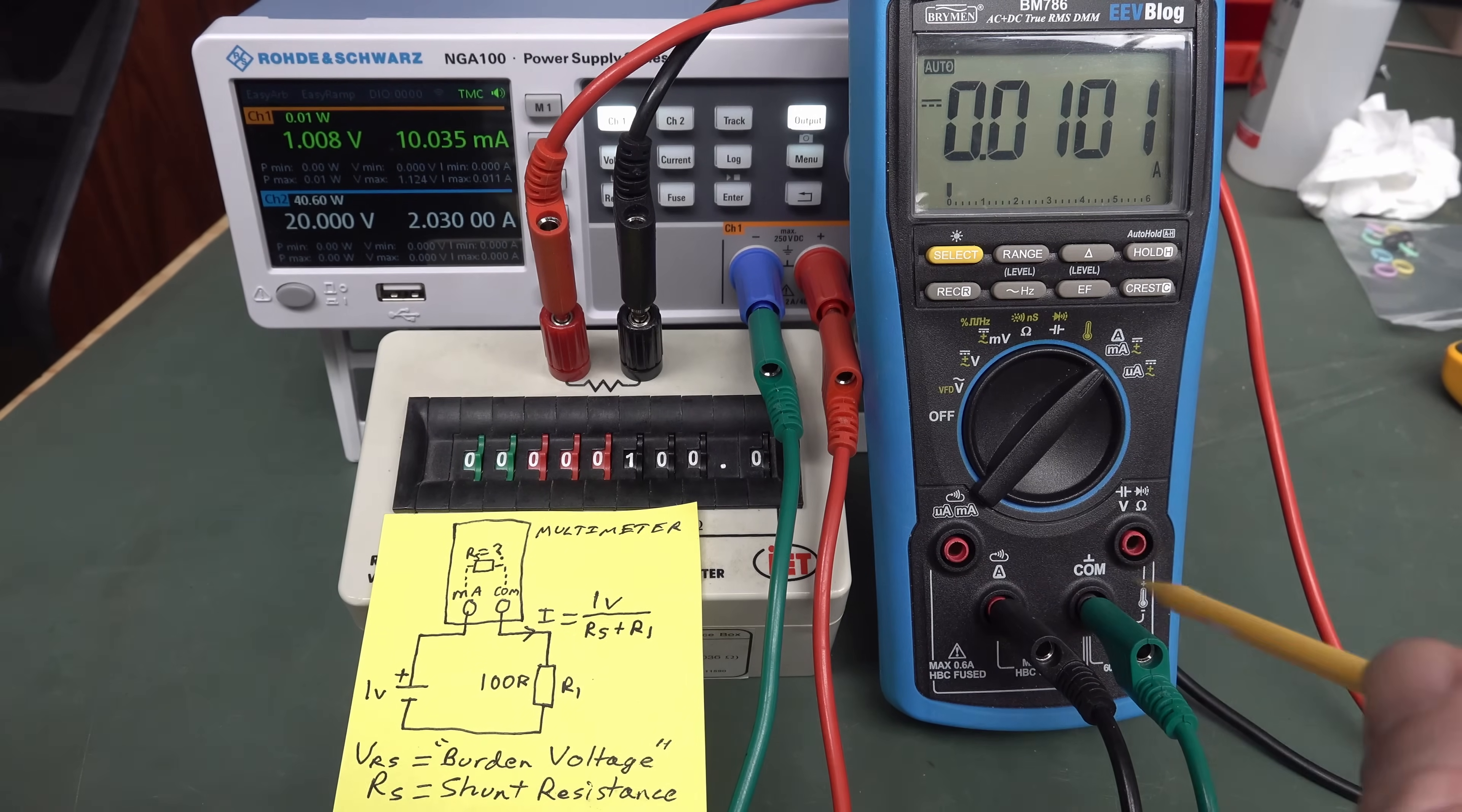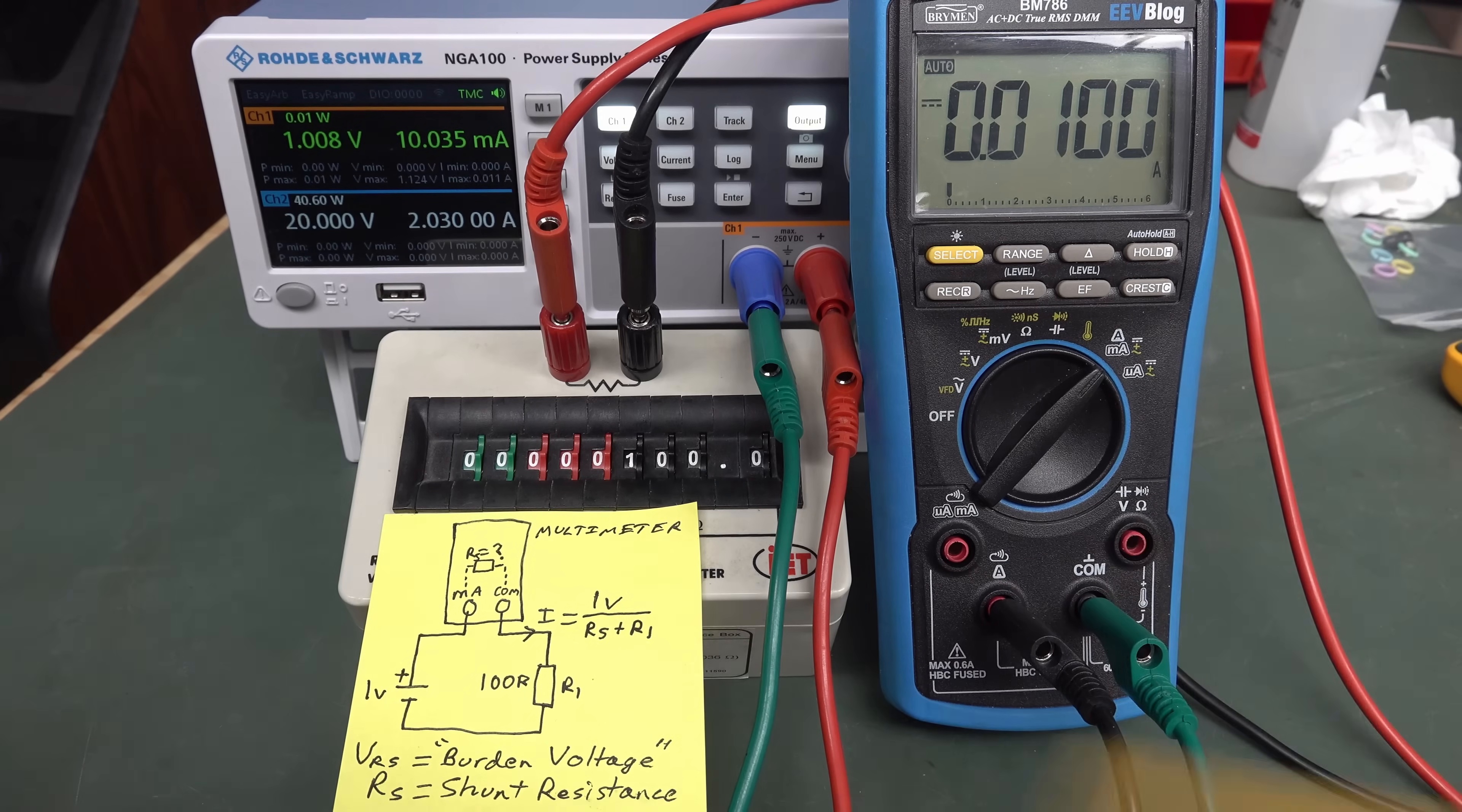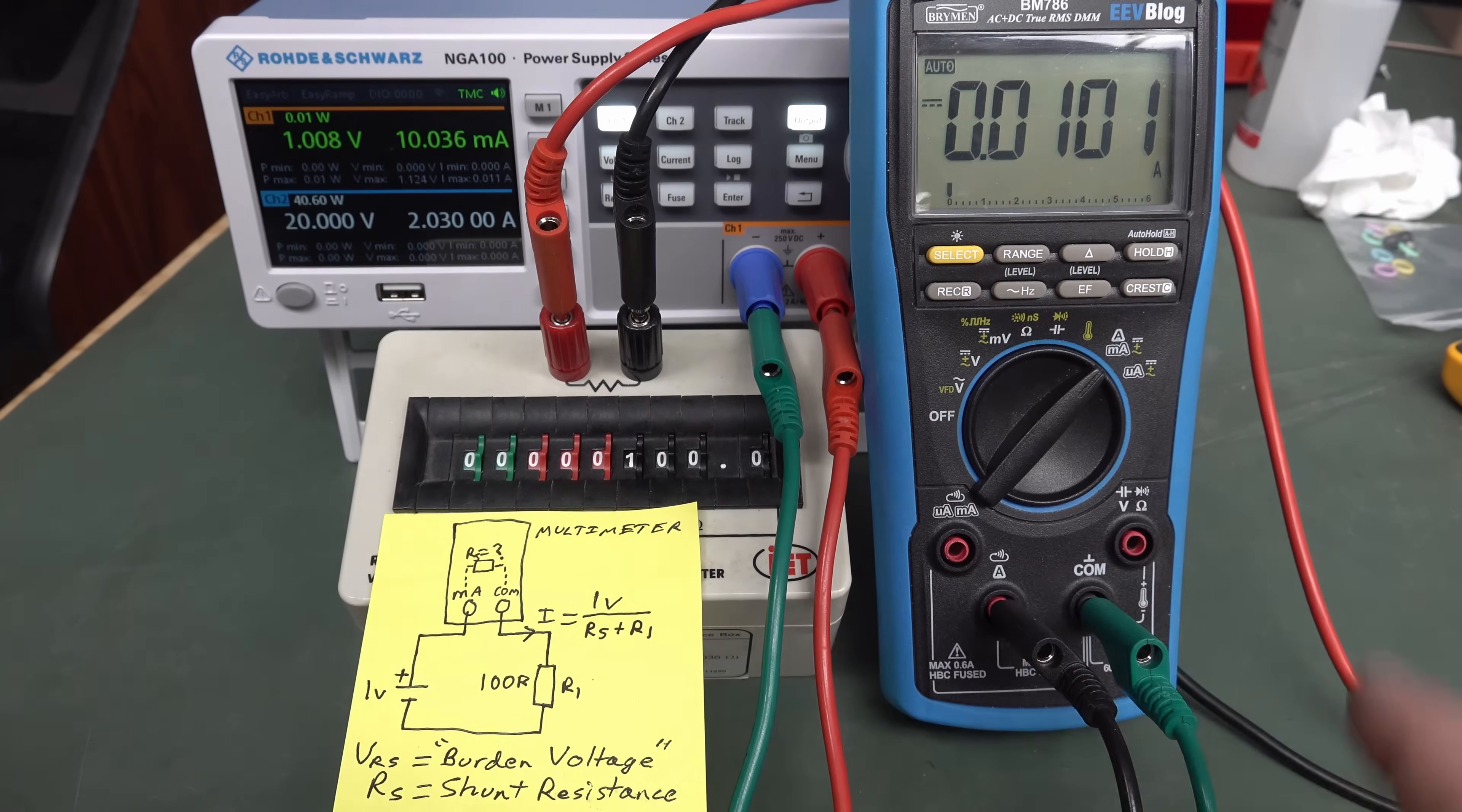If you actually go and put 10 amps, try it on your multimeter at home, put 10 amps through your amps jack, and actually you can put a second multimeter, this is why you should have two multimeters, second multimeter across here, and you can actually measure the burden voltage yourself.